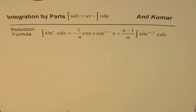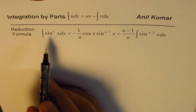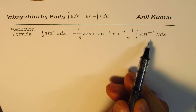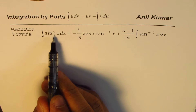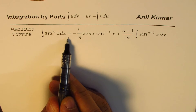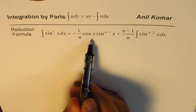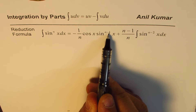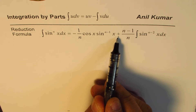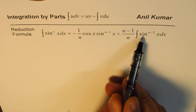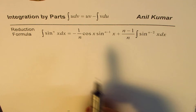I'm Anil Kumar and in this video we'll explore the reduction formula for the integral of sine to the power of nx. The formula is given here: the integral of sine to the power of nx dx is equal to minus 1 over n times cos x times sine to the power of n minus 1 of x, plus n minus 1 over n times the integral of sine to the power of n minus 2 of x dx.